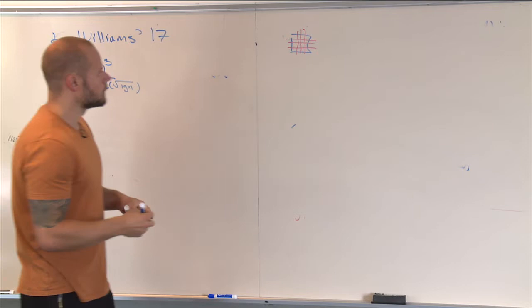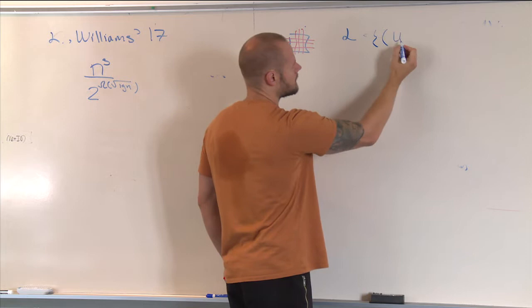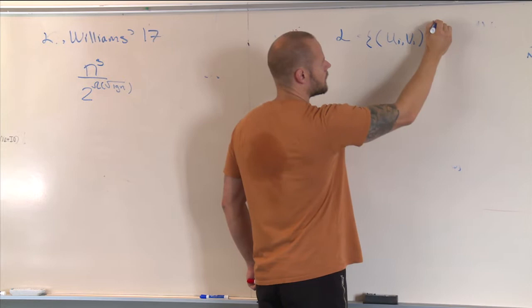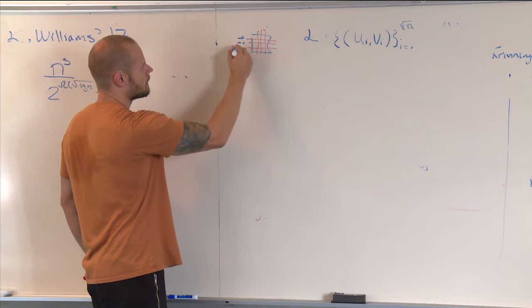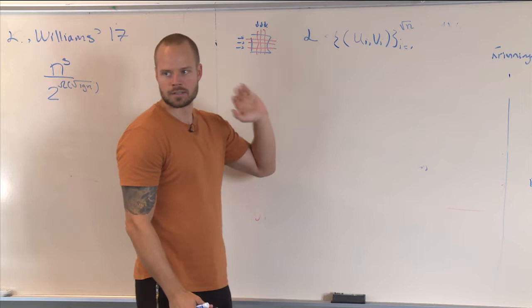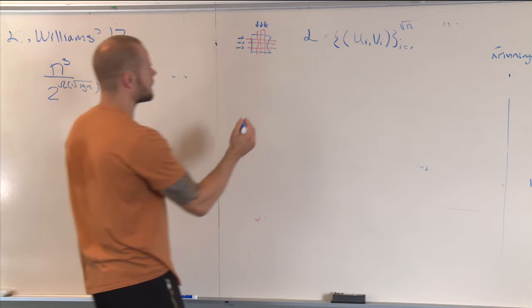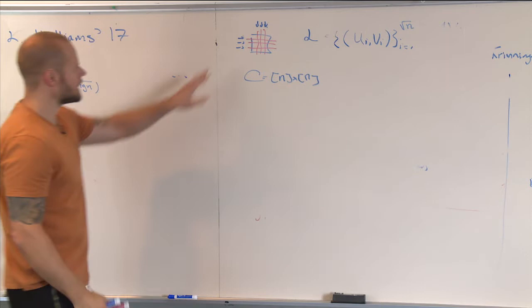We're going to store a list L consisting of pairs (ui, vi), up to √n pairs. Each pair — ui specifies a subset of rows, vi specifies a subset of columns. We're going to guarantee that the submatrix corresponding to each pair has no ones. We initialize C to contain all entries. As long as there exists a pair (ui, vi) such that A restricted to the submatrix indexed by ui, vi is all zero, and its intersection with the uncovered entries C has size at least n^(3/2), we add that pair.